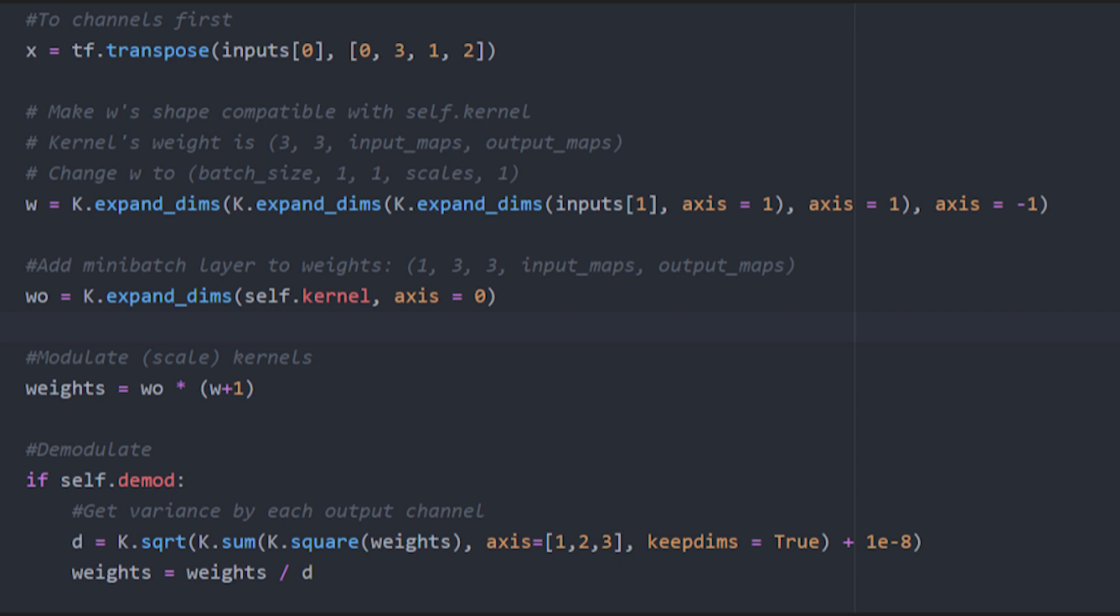Now we have two inputs one with the feature maps and one with the weight scaling values. We want to reshape the weight scales so that they're compatible with our kernel. Then we want to add a mini batch layer to our kernel as the weights will be different for each instance in the batch.